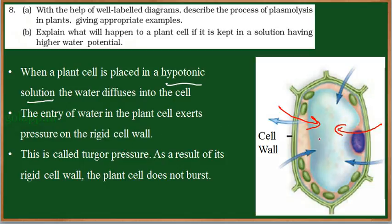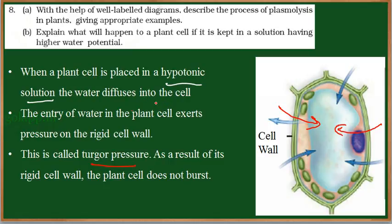As a result, the pressure increases inside the cell and this pressure is exerted on the cell wall. But since the cell wall is rigid and hard, it can withstand the pressure. This pressure is called turgor pressure, and it prevents the plant cell from bursting. So when a plant cell is placed in a hypotonic solution, water diffuses into the cell, the cell swells, and the pressure inside increases, but the cell wall withstands it and hence the plant cell does not burst.